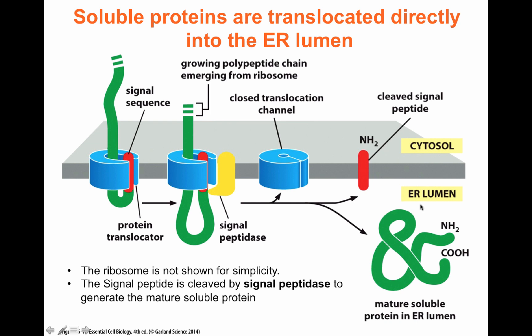The nascent protein is held in the protein translocator and as it is pushed through by the ribosome, eventually the entire protein comes through. The signal sequence is removed by a signal peptidase that clips it out, and it diffuses across the membrane and is later destroyed. The protein is translocated completely across the membrane of the ER and is now present in the lumen. This protein is soluble — for example it could be a cytokine or a protein like insulin — that will eventually make it to the plasma membrane.